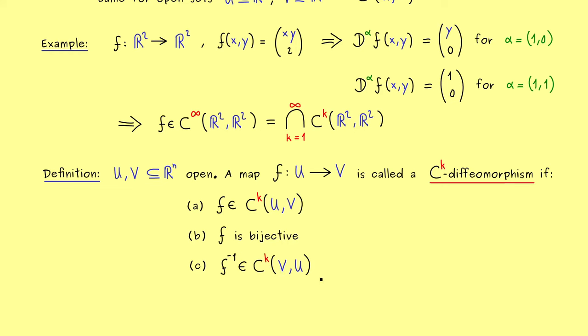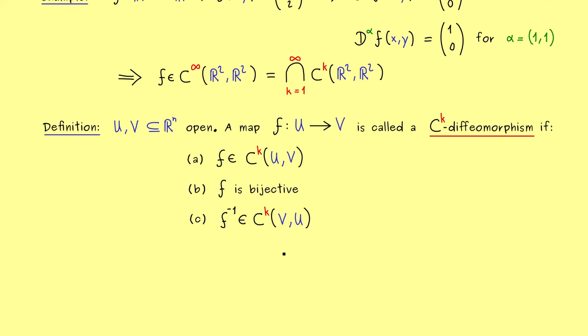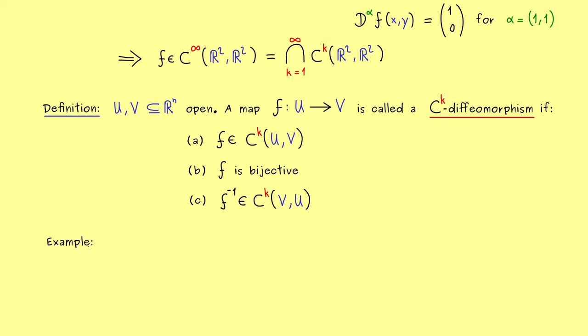So you can simply remember, a C^k diffeomorphism is a bijective map that is in both ways continuously differentiable up to the order k. And now to visualize that, let's look at some simple examples. Therefore, let's start with one-dimensional examples.